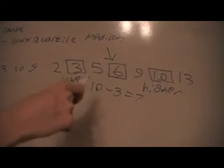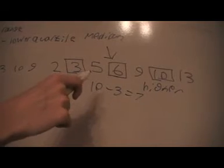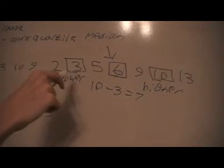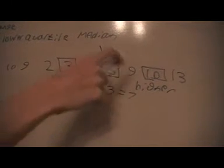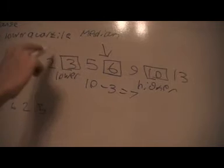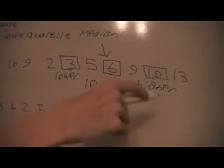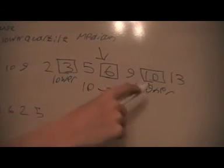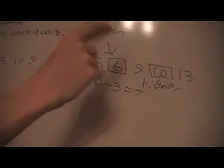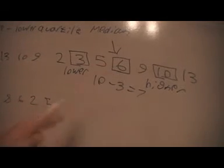So basically what you do to find the interquartile range, just as a recap: first you locate where the median is. Then you've got the half below the median in your data and the half above the median. You work out the median of the lower part and the median of the higher part. And you subtract the lower part away from the higher — and that gives us the interquartile range.